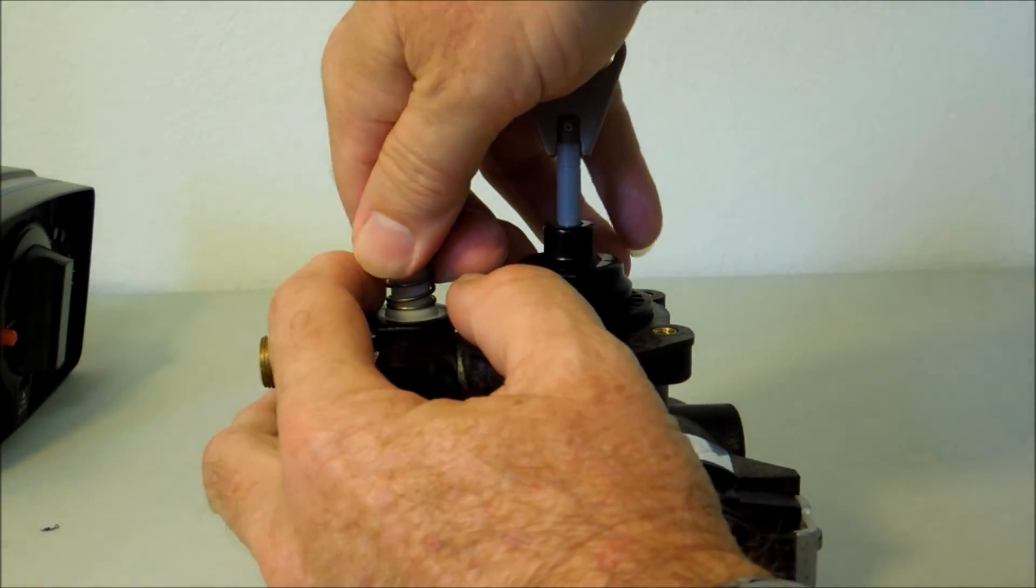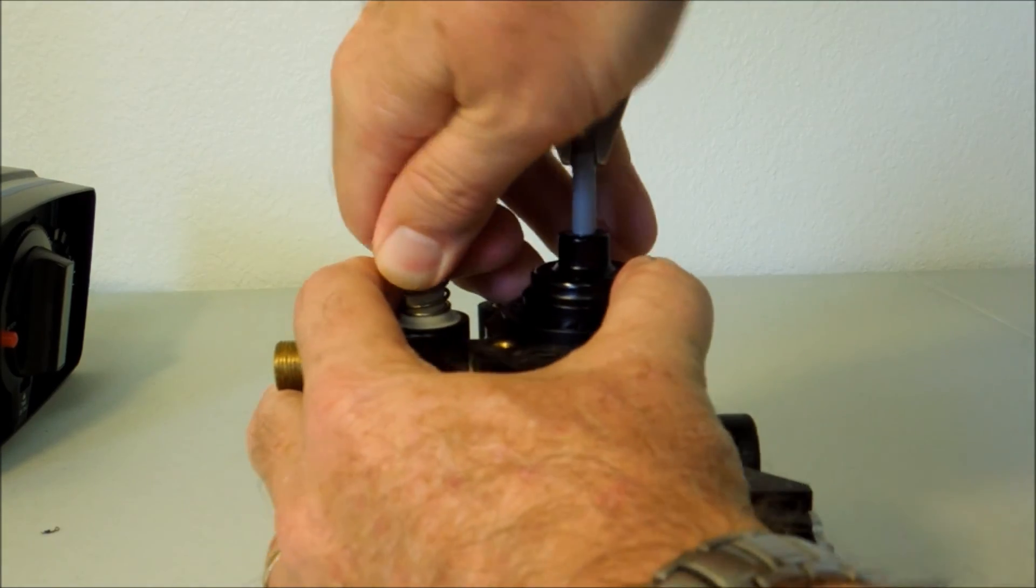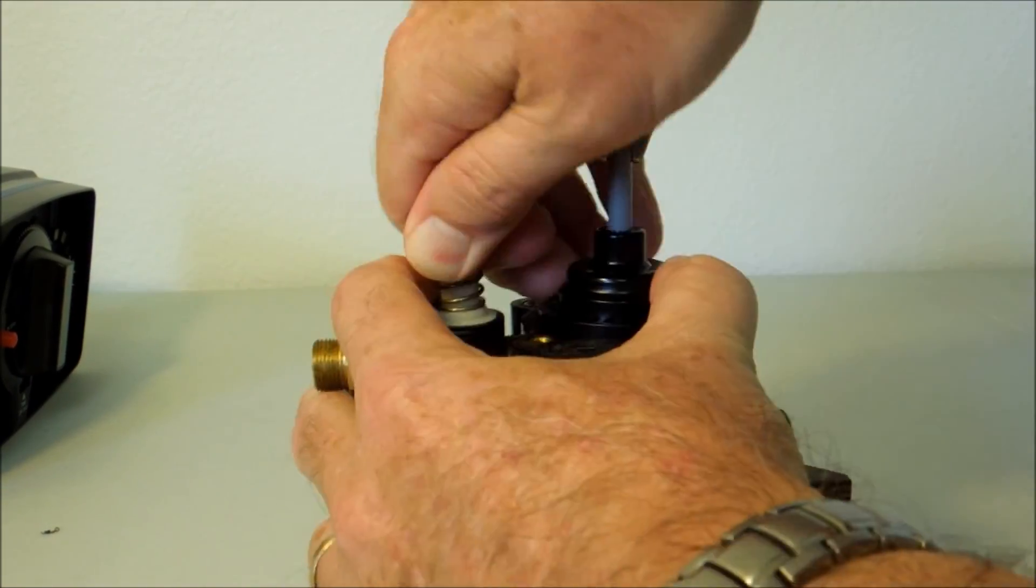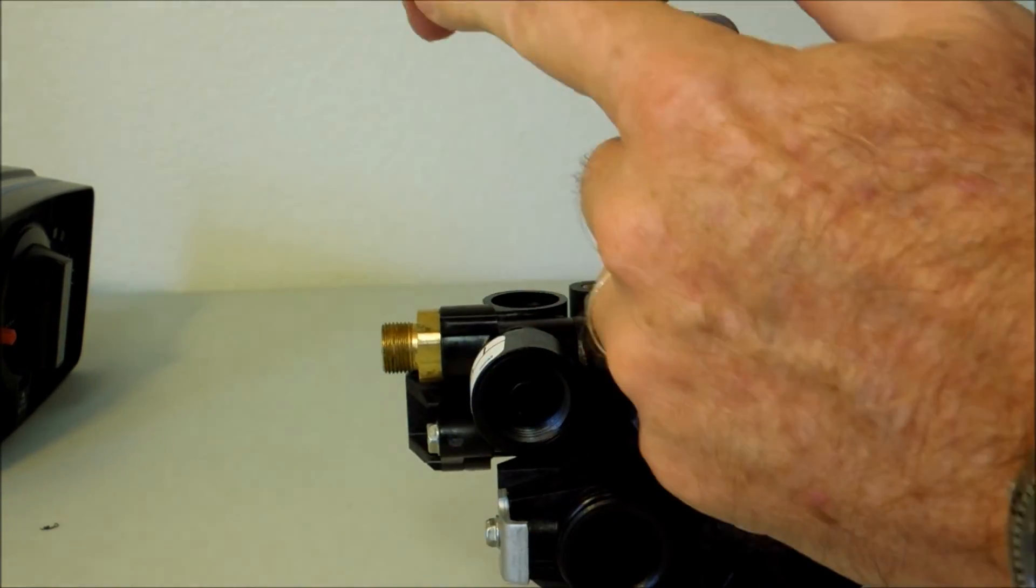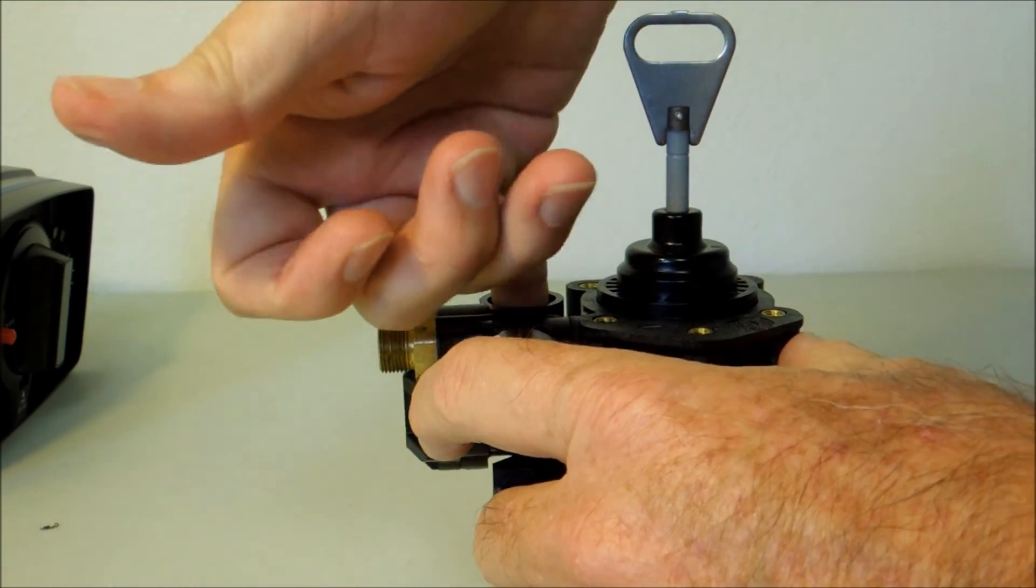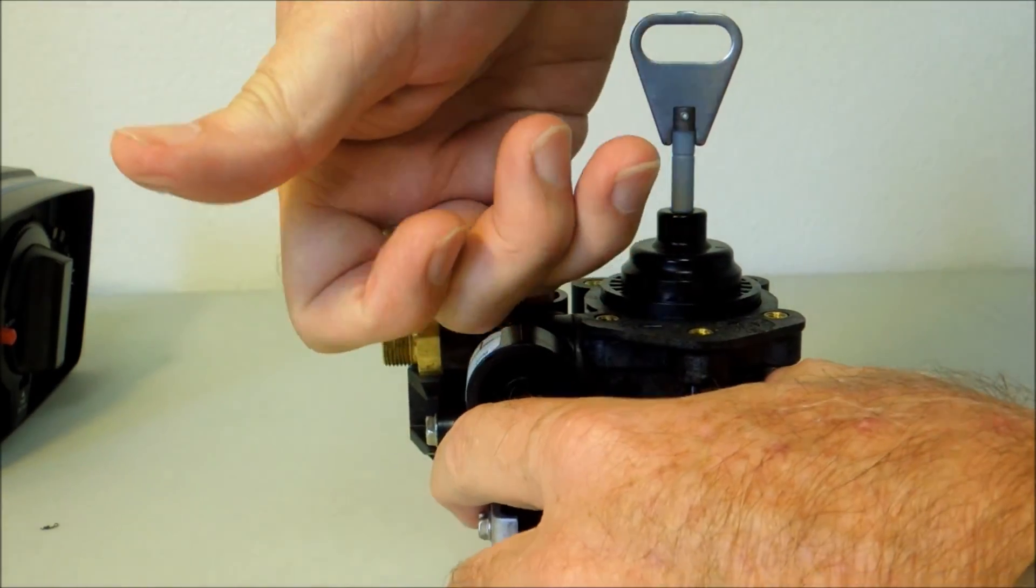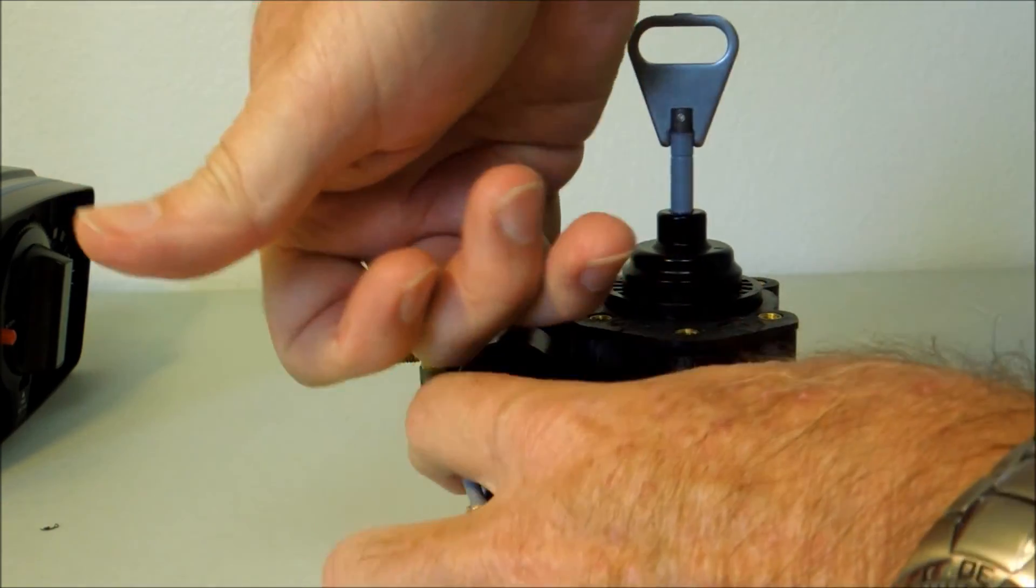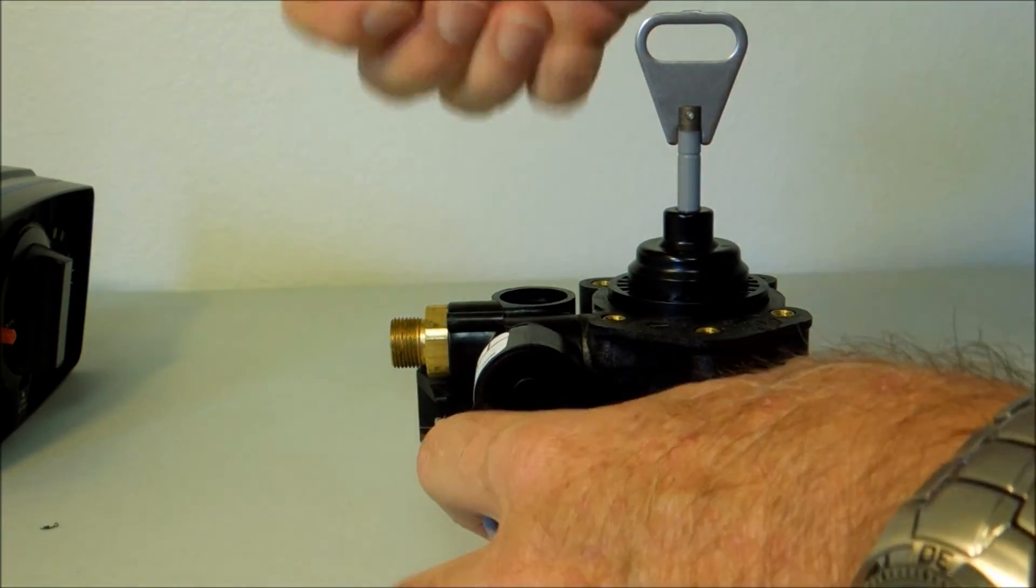And then we will remove the brine valve, so just wiggle that and pull hard. Make sure the bottom o-ring doesn't come out with it. Since we're not going to use the brine valve, we can pull that o-ring out of the hole altogether.